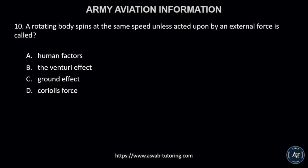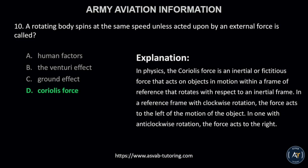Number 10. A rotating body spins at the same speed unless acted upon by an external force — this is called A, human factors; B, the Venturi effect; C, ground effect; or D, Coriolis force? In physics, the Coriolis force is an inertial or fictitious force that acts on objects in motion within a frame of reference that rotates with respect to an inertial frame. In a reference frame with clockwise rotation, the force acts to the left of the motion of the object; in one with anticlockwise rotation, the force acts to the right.